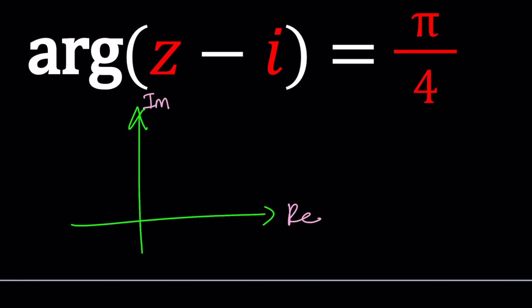The x-axis represents the real part, and the y-axis represents the imaginary part. A complex number z is made up of a real part and an imaginary part.